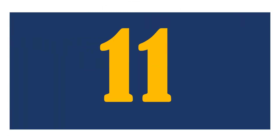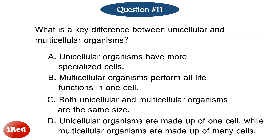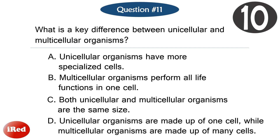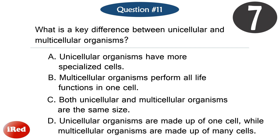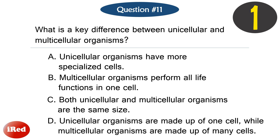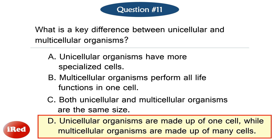Question number eleven. What is a key difference between unicellular and multicellular organisms? The answer is D: unicellular organisms are made up of one cell, while multicellular organisms are made up of many cells.